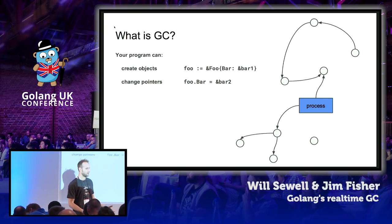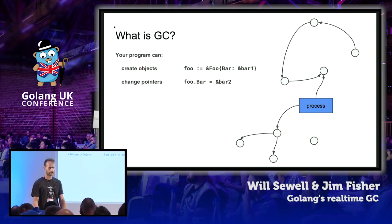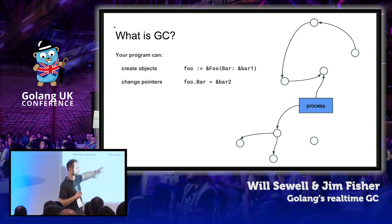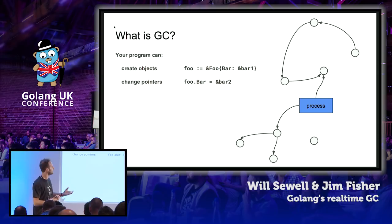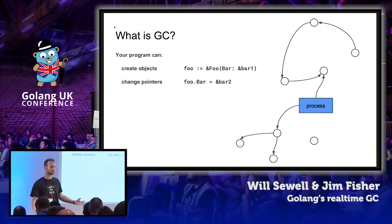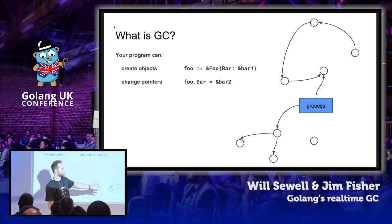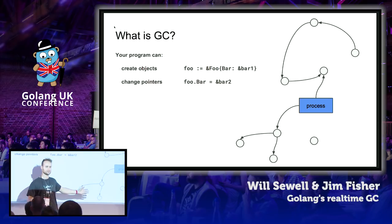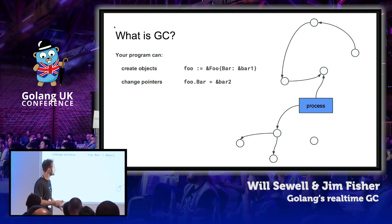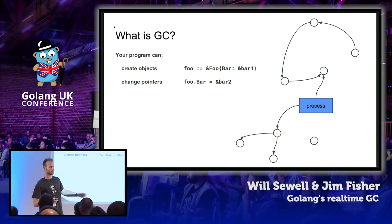At a high level, what your program does — whether it's Haskell or Go or pretty much any other mainstream language — is it can do two things: it can create objects, and it can move pointers around between those. In Go, you can take the address of an object literal, and that creates a new object on the heap. You can also change pointers by assigning the address of an object to a field in some other object.